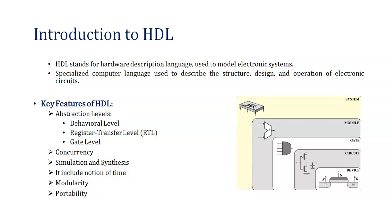So what is meant by HDL? HDL is the Hardware Description Language. It is a specialized computer language used to describe the structure, design and operation of digital circuits — that is, to model electronic systems. Hardware Description Languages are used in the design and development of digital circuits such as microcontrollers, memory, integrated circuits, and whatnot.